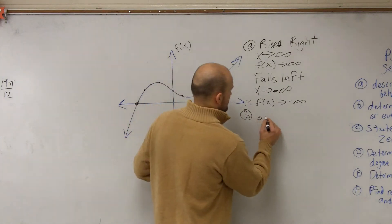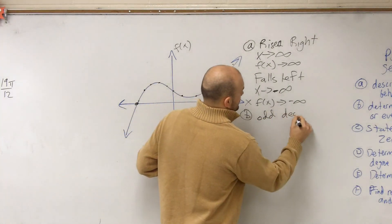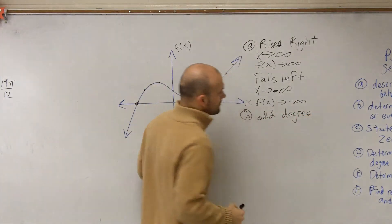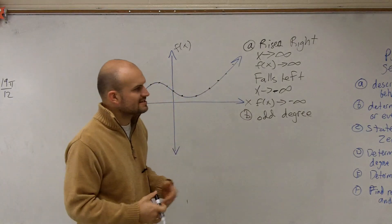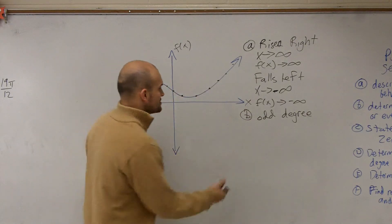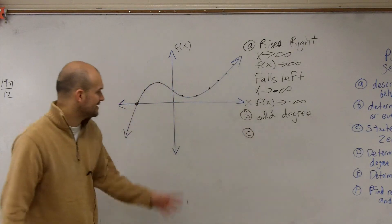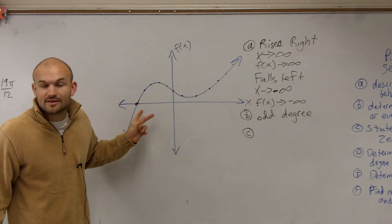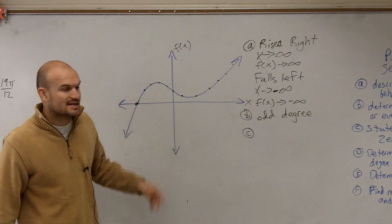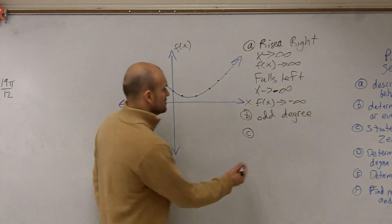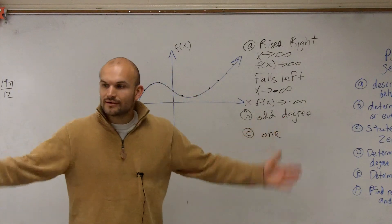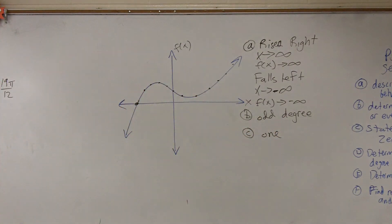Good. And what we'll also state is the number of zeros. We already kind of did this — there's only one zero, right? There's only one time that the graph crosses the x-axis. So we just have one zero. That's all we need to do. Thank you for the birthday!